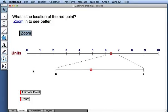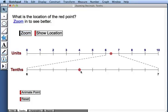We see the interval between 6 and 7 expands. We see the same red point at the same location as on our original number line. But now we have additional tick marks that are evenly spaced that allow us to read the location of the point. I see that the point is sitting at 6 and 4 tenths.